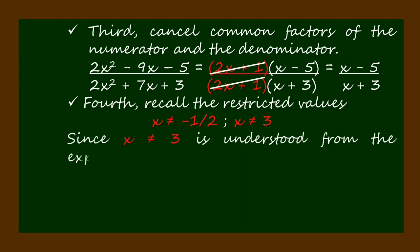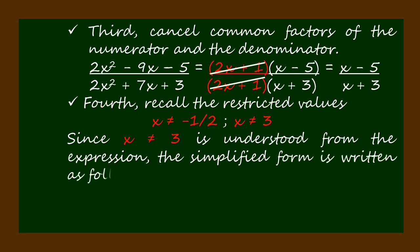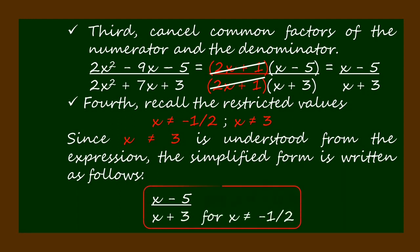Since x ≠ -3 has been understood from the expression, the simplified form of the rational expression is written as (x - 5)/(x + 3) for x ≠ -1/2.